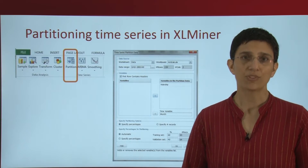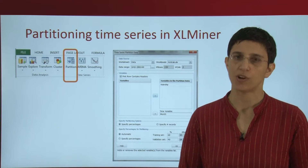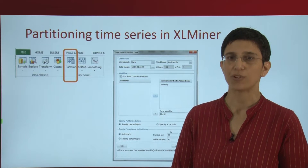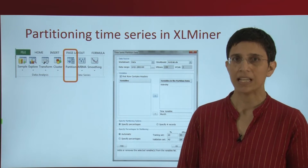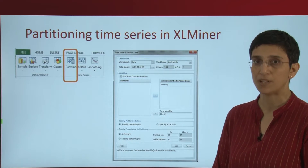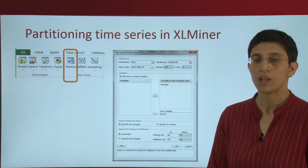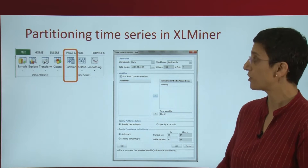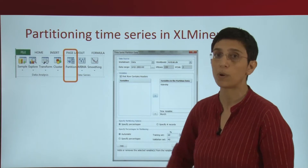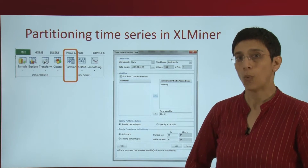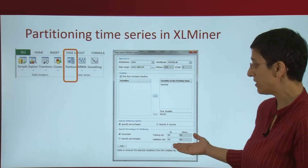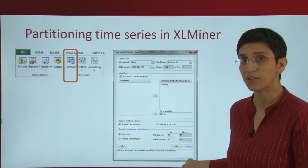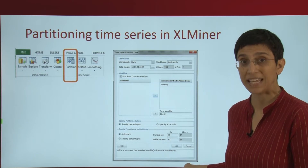We might use something like XLMiner, or a software that uses menus. Make sure that you're using a data partitioning function that is intended for time series. For example, in XLMiner there's a strip for time series, and that is where we will choose partitioning. Once you do that, it will allow you to specify how many records at the very end of the series will be allocated to the validation set.